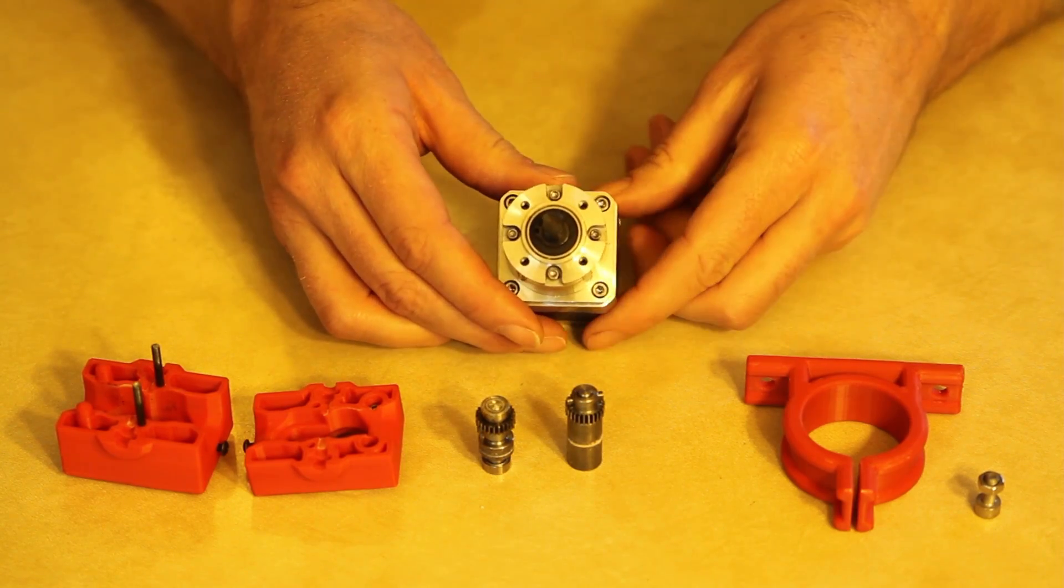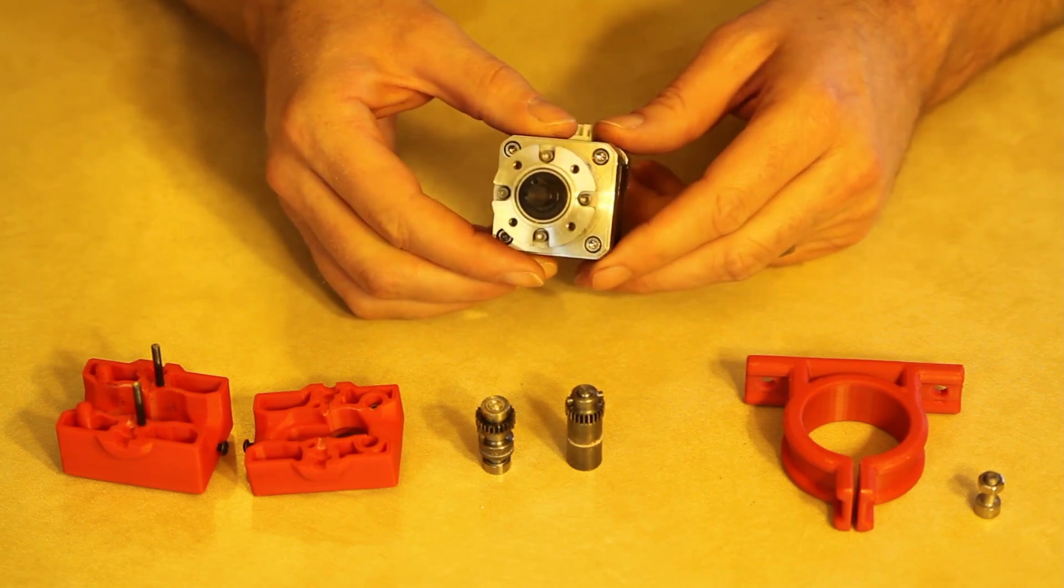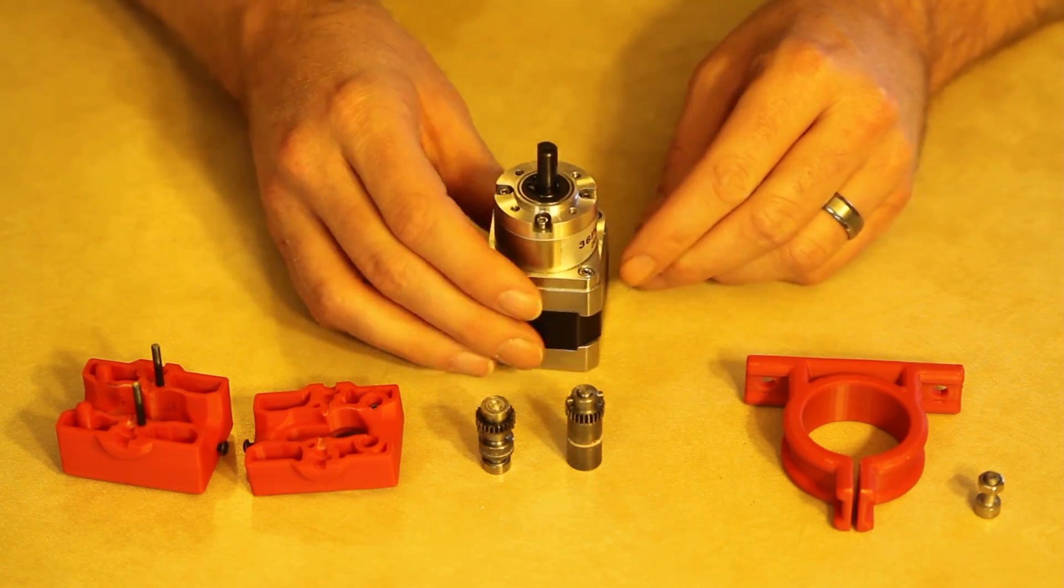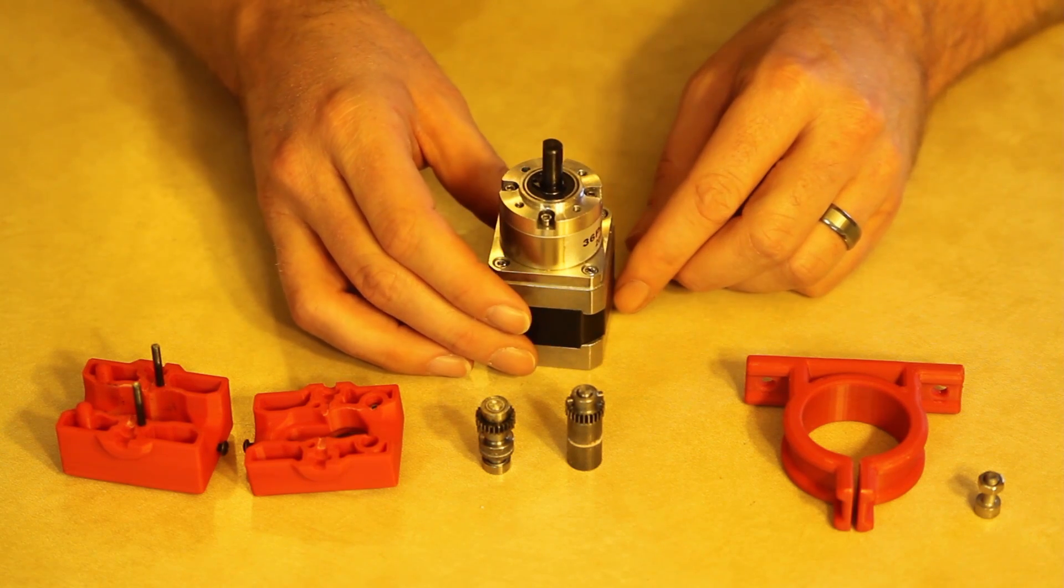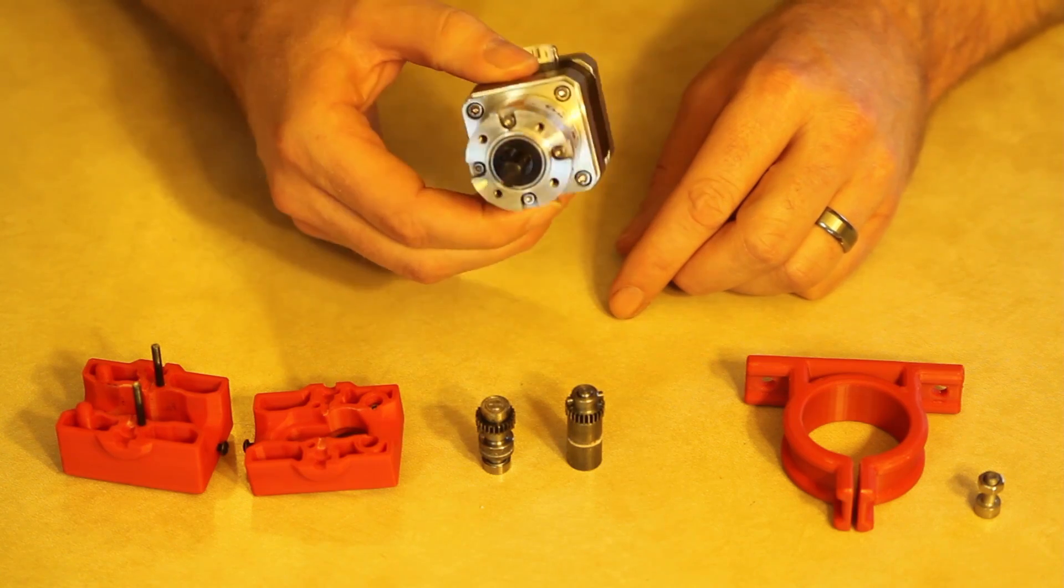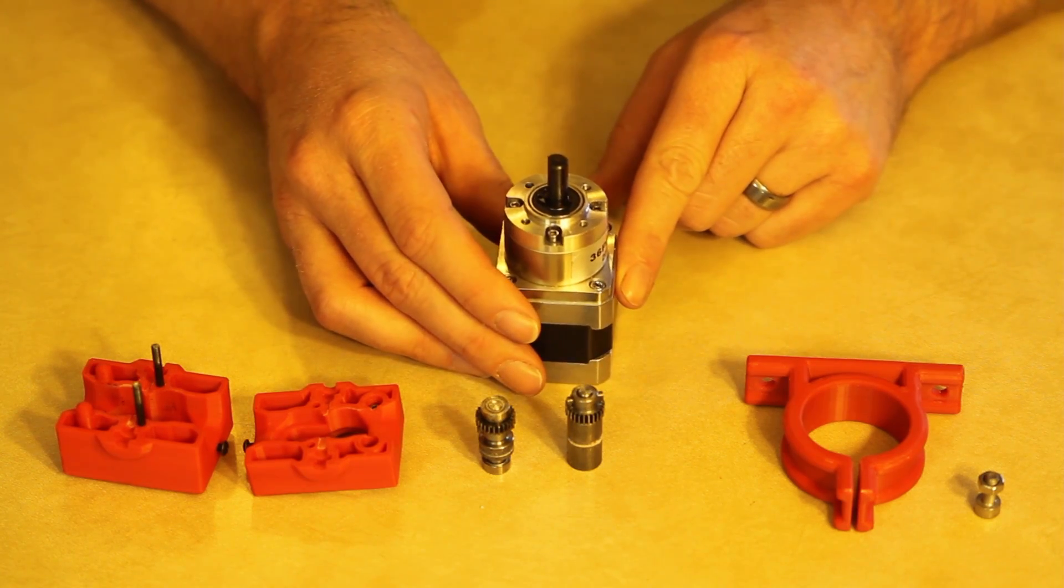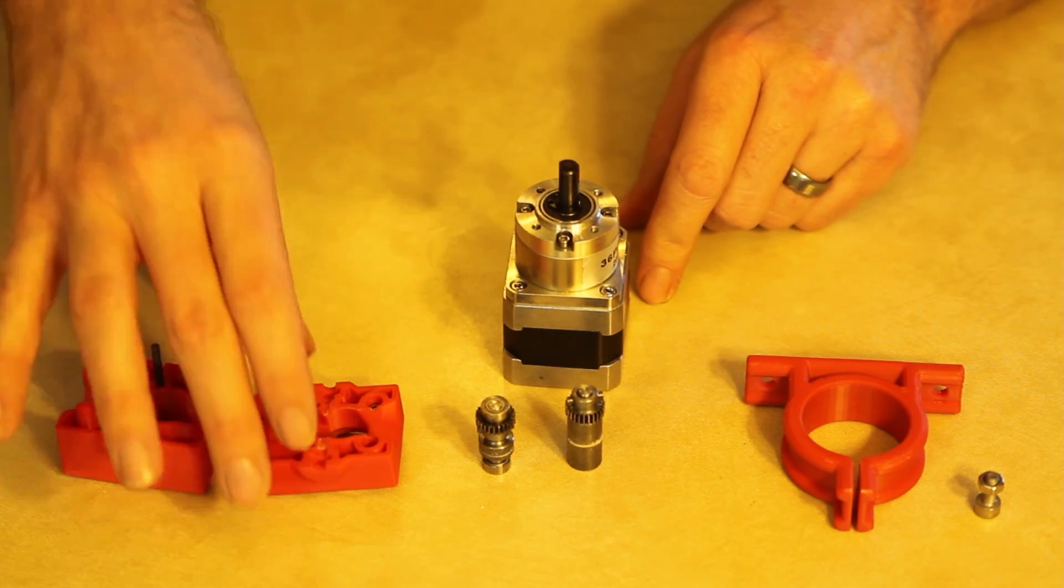So it all kind of starts out here with this 5.18 to 1 Planetary NEMA 17. I've been using these for a while on my Hercustruder and some other air tripper designs, and I really like these ones. You get really high resolution, really high force. So it starts out with that.